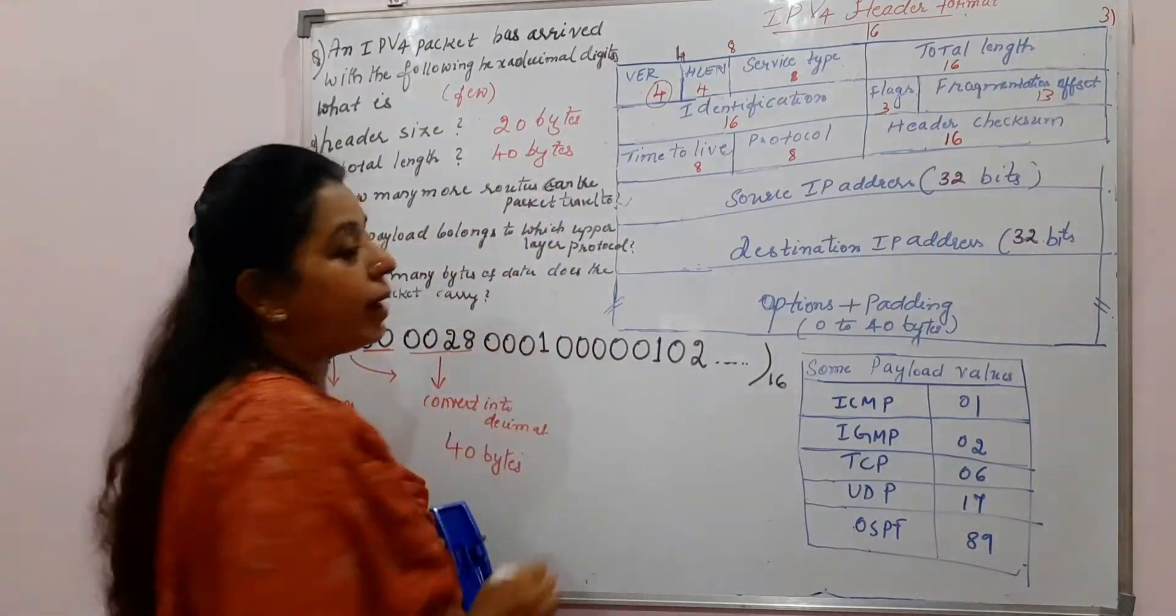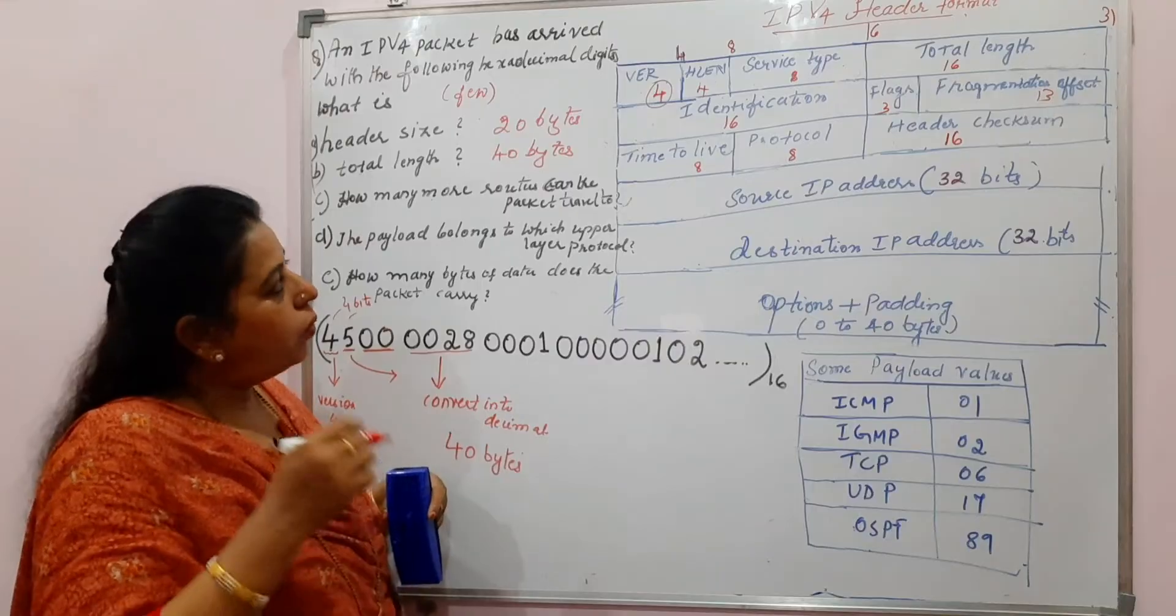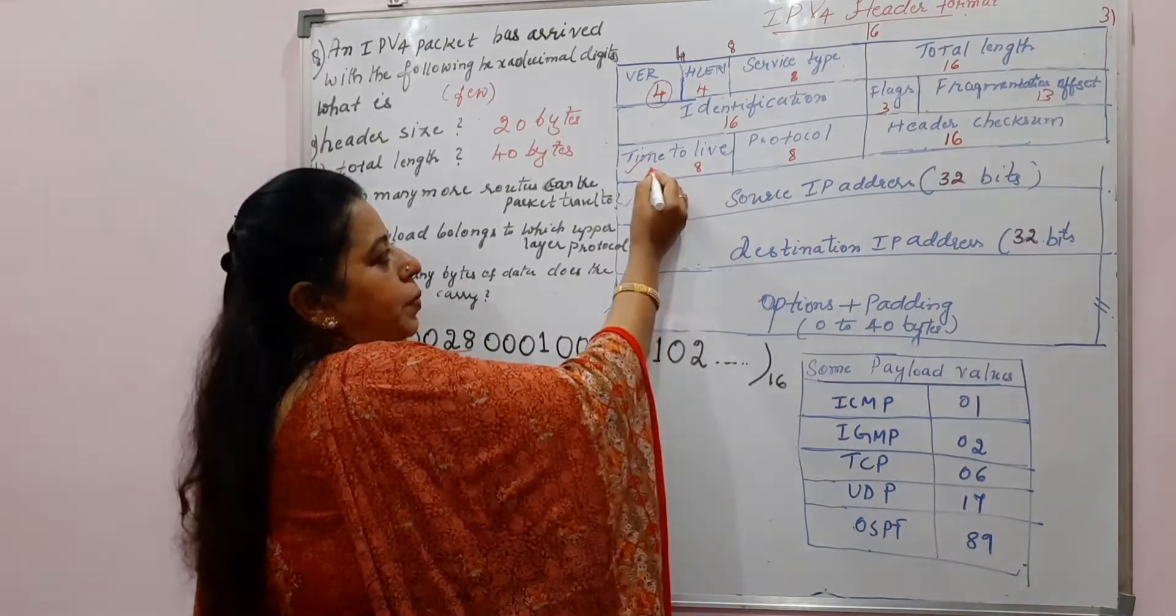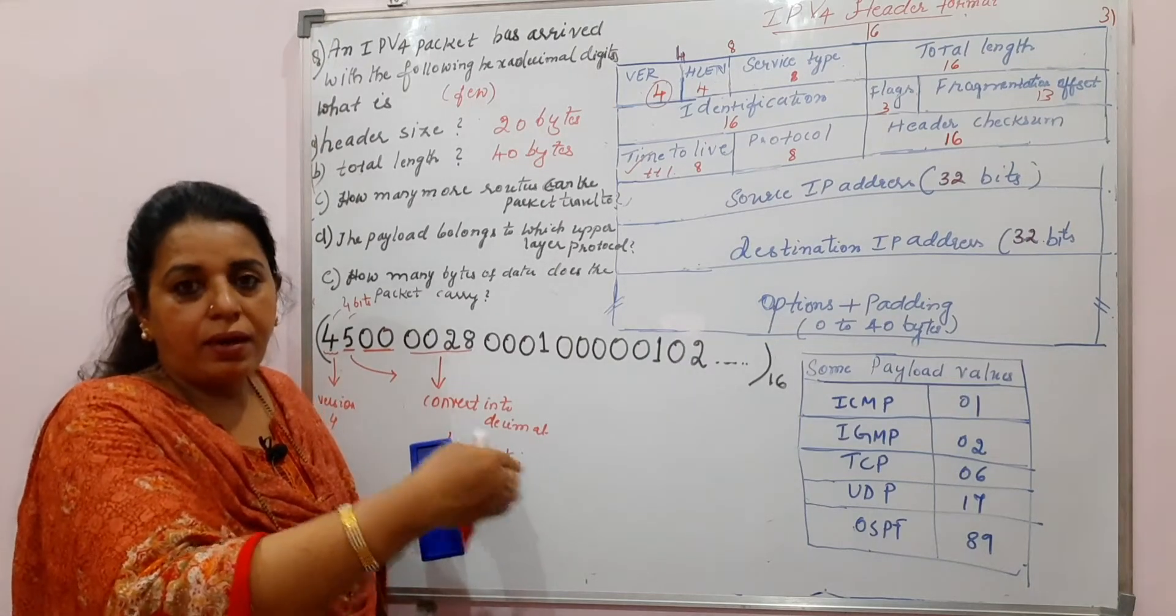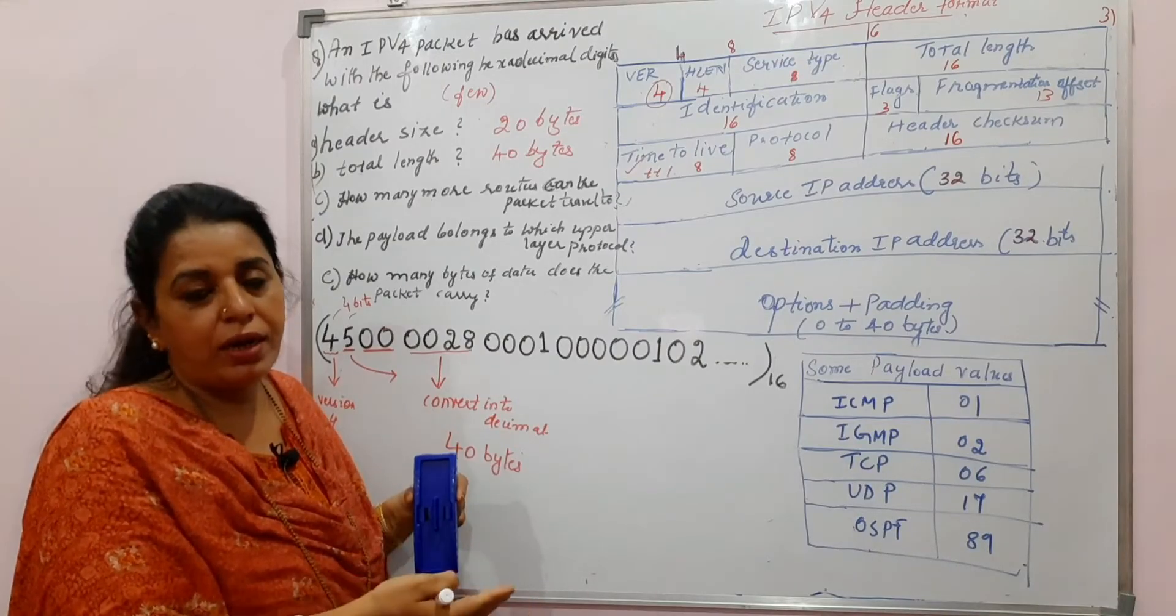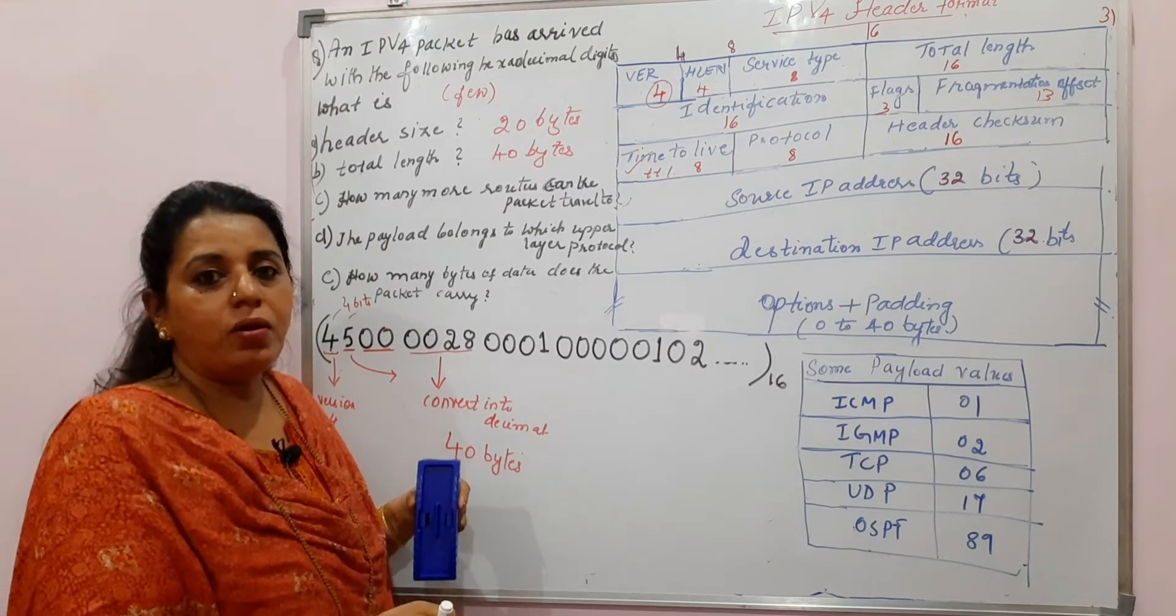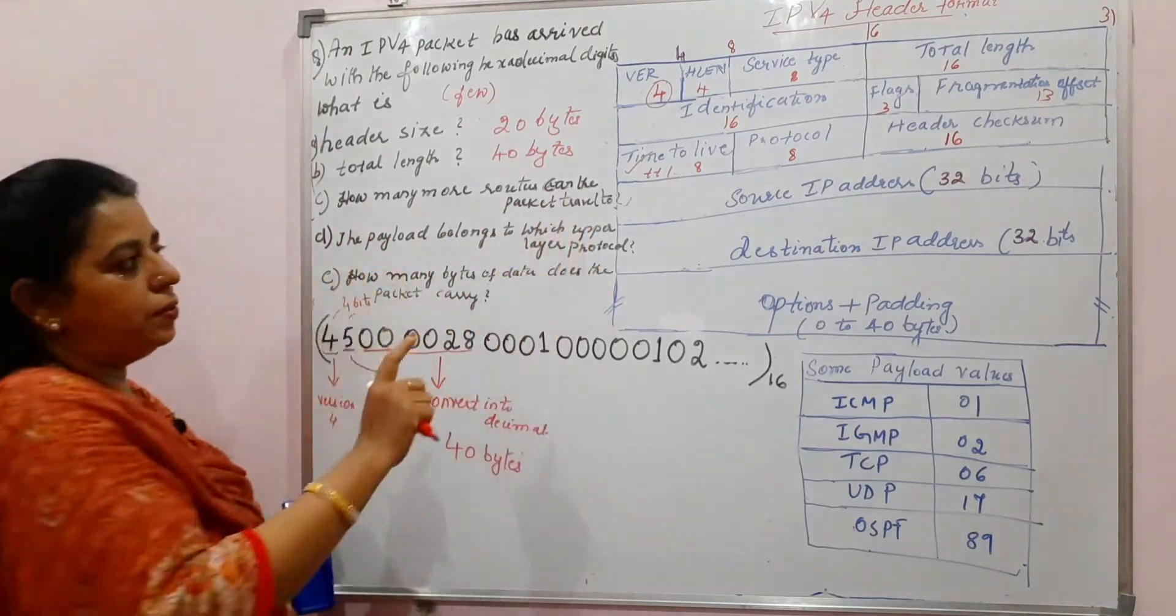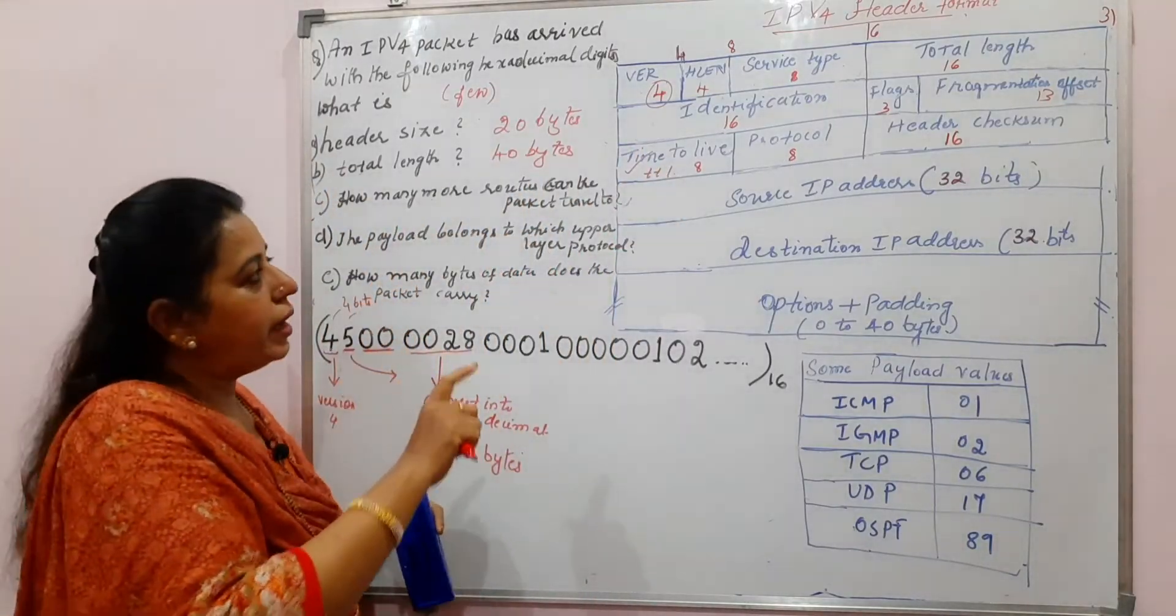The C part is how many more routers can the packet travel to? How to get this result? How to write the answer for this C part? How many more routers can the packet travel to? That can be indicated from the time to live. Time to live popularly known as TTL field because this packet which starts from the sender and when it travels during the transmission, when it moves to the next router, the router will decrement the value of TTL by 1. Every router in the path will decrement the value of TTL by 1. How many more routers can the packet travel to? Definitely the time to live value can give you the number of routers also here.